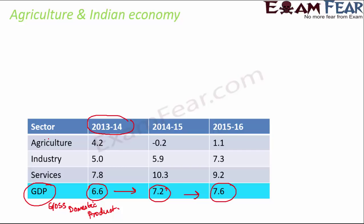Even though the overall GDP growth rate is increasing, the contribution to GDP from the agriculture sector is actually reducing — and the reduction is tremendous, from 4.2 to minus 0.2. There is a slight increase after that, but overall it is decreasing. So agriculture is not really contributing to India's GDP. Is that a good thing?